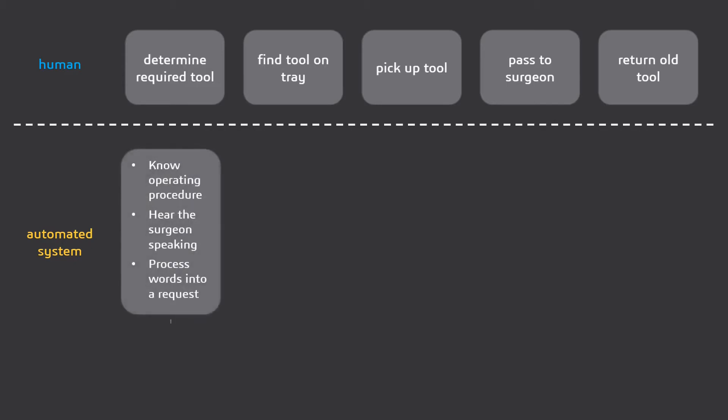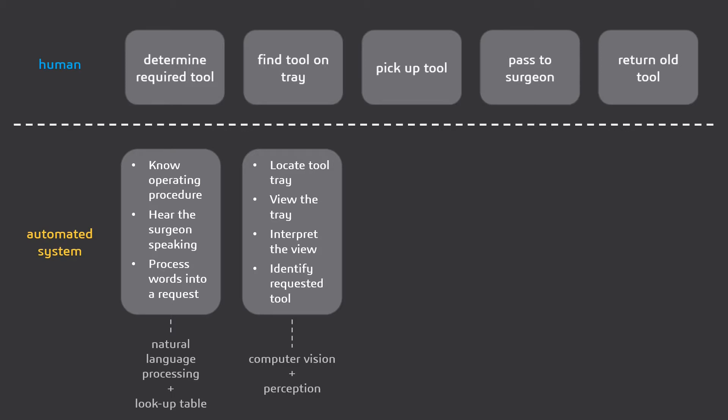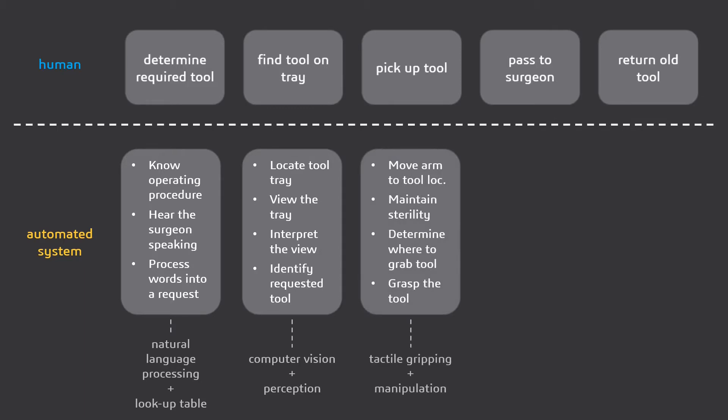Natural language processing, coupled with a lookup table, can be used to process the surgeon's words into a request and determine the required tool. To view the tray and identify the requested tool, computer vision plus perception can be applied. Next, tactile gripping and manipulation can be used to grasp and maintain sterility of the tool.